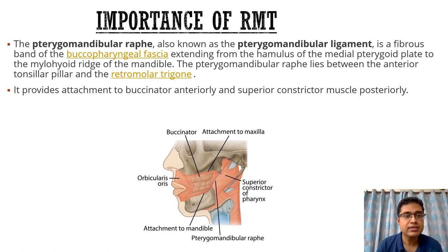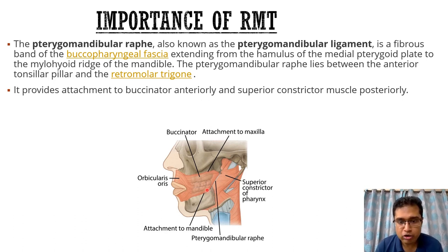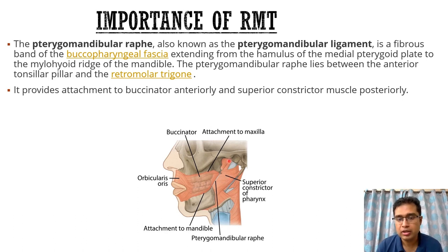This area is so important because underlying this mucosa is the pterygomandibular raphe — a fibrous band of buccopharyngeal fascia extending from the hamulus of the medial pterygoid plate to the mylohyoid ridge of the mandible. The pterygomandibular raphe lies between the anterior tonsillar pillar and the retromolar trigone. It provides attachment to the buccinator anteriorly and the superior constrictor muscle of the pharynx posteriorly.